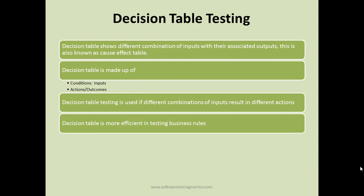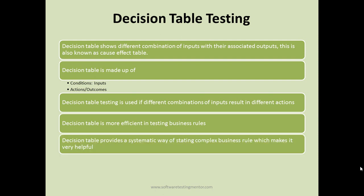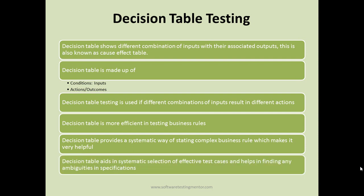Decision table testing is more efficient when testing business rules. Whenever you are testing business rules that are dependent on different conditions, you should use decision table testing. It provides a systematic way of stating complex business rules, making it easy to identify what the outcome will be for any given combination of conditions.